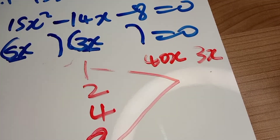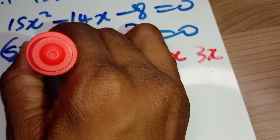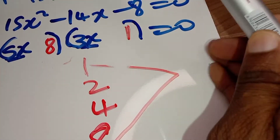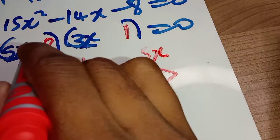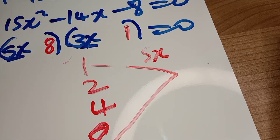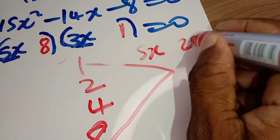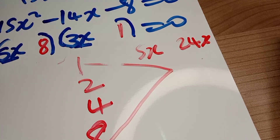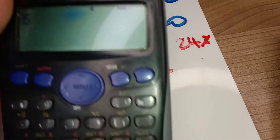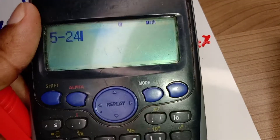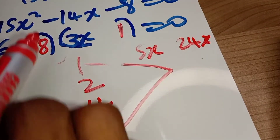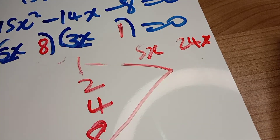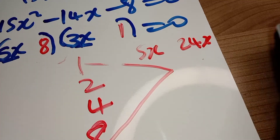We can try one here and eight there in the other arrangement. Then 5x multiplying the one gives us 5x, and 8 multiplying the 3x gives us 24x. 5x subtract 24x gives us negative 19x, and we need negative 14x — not negative 19x. So 1 and 8 are bad factors which don't suit us here.